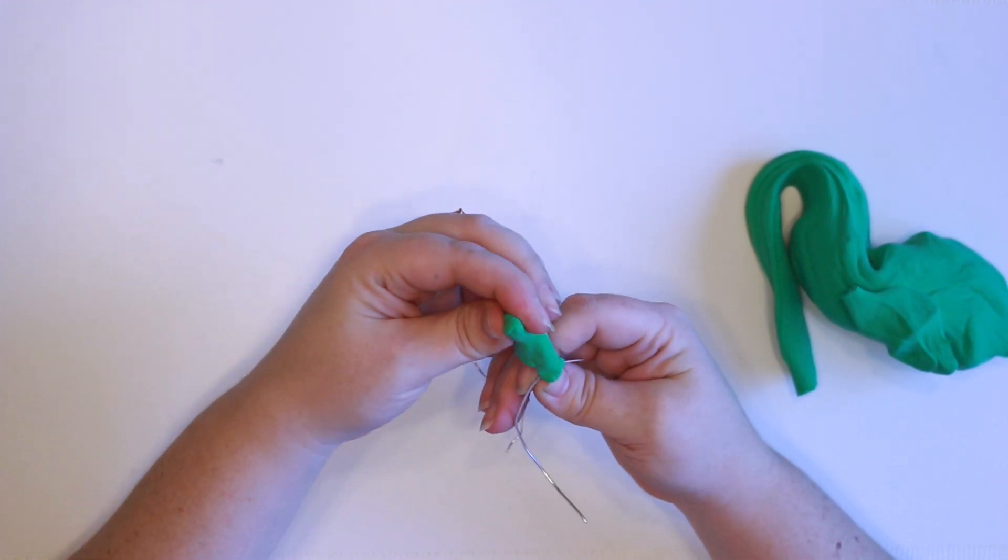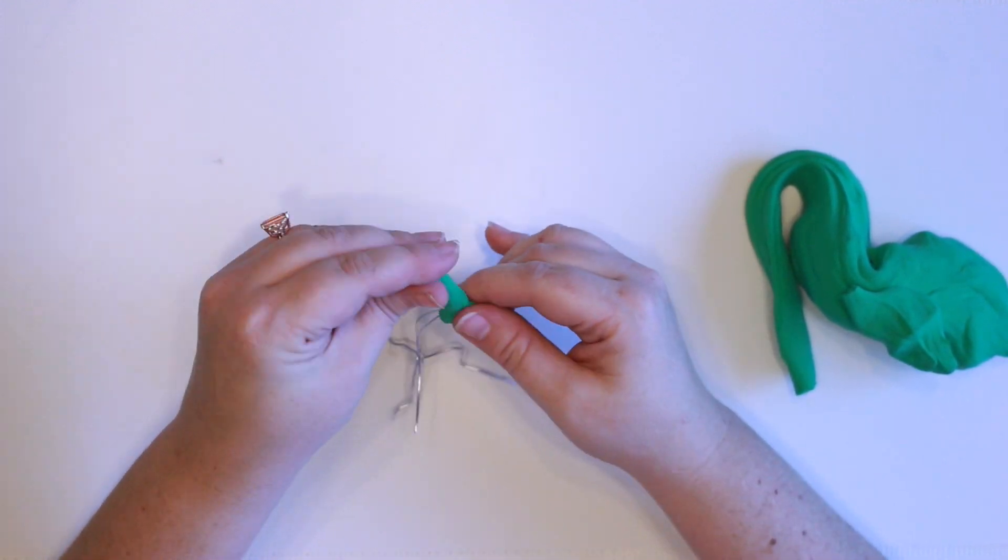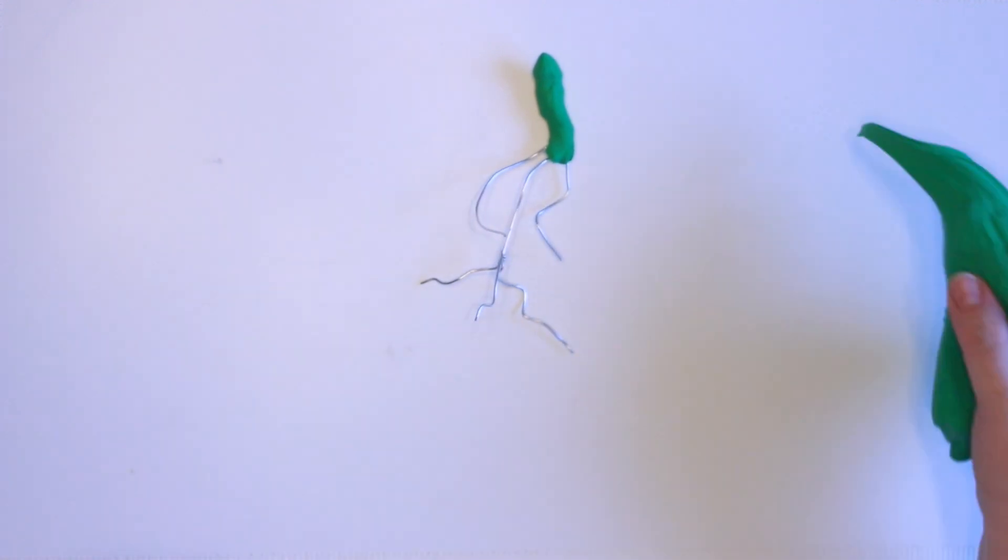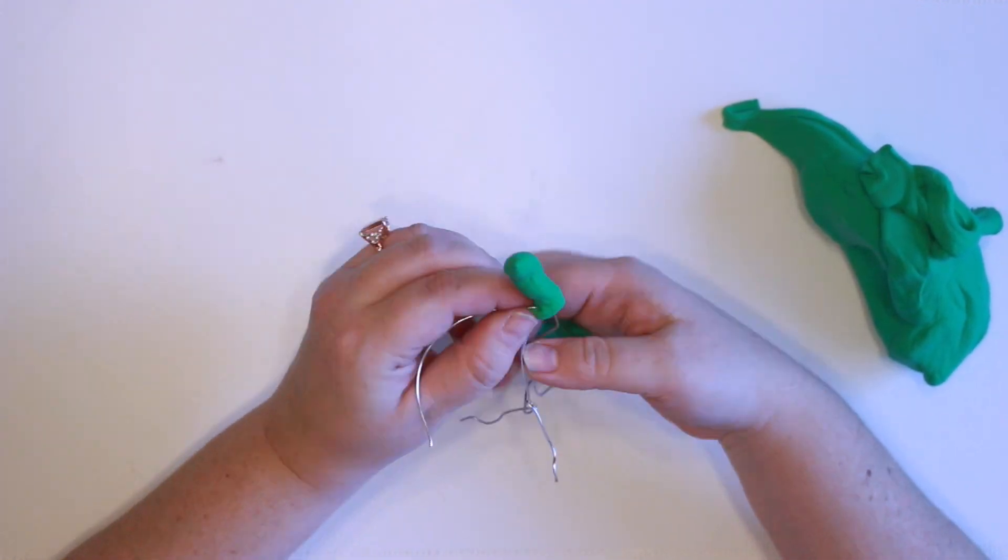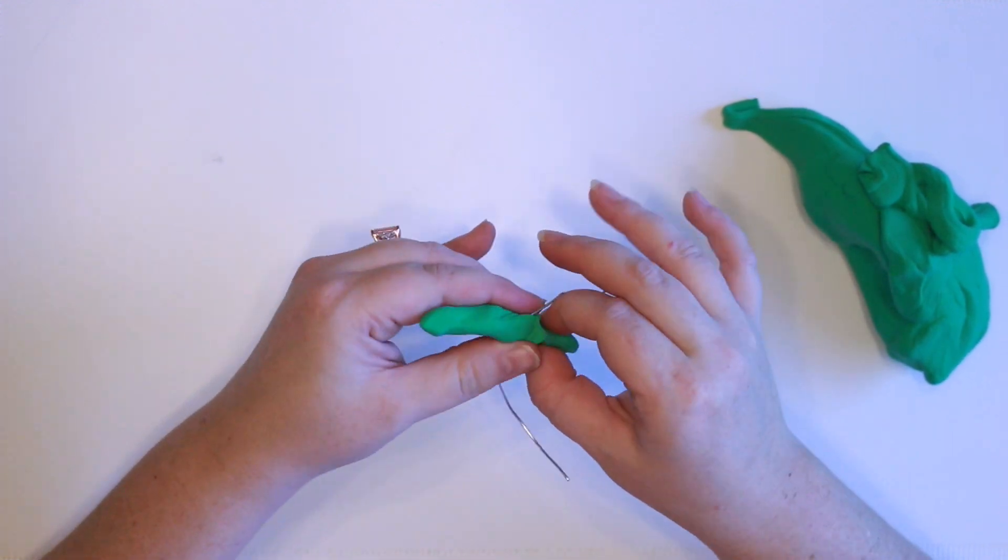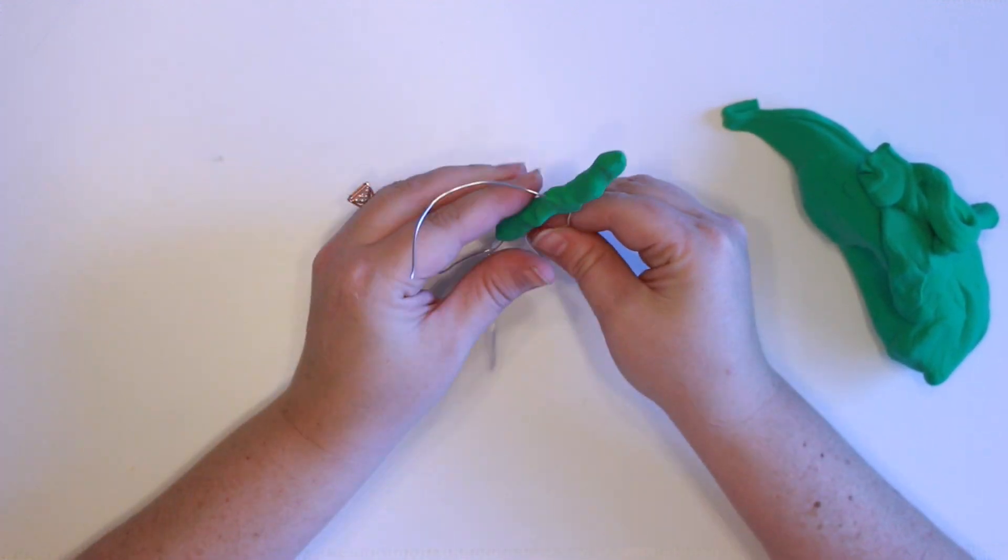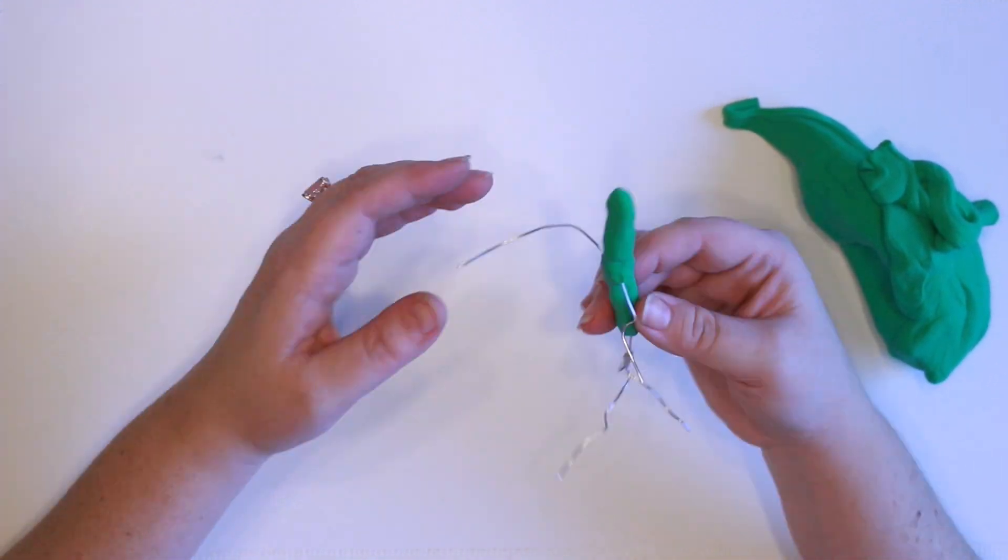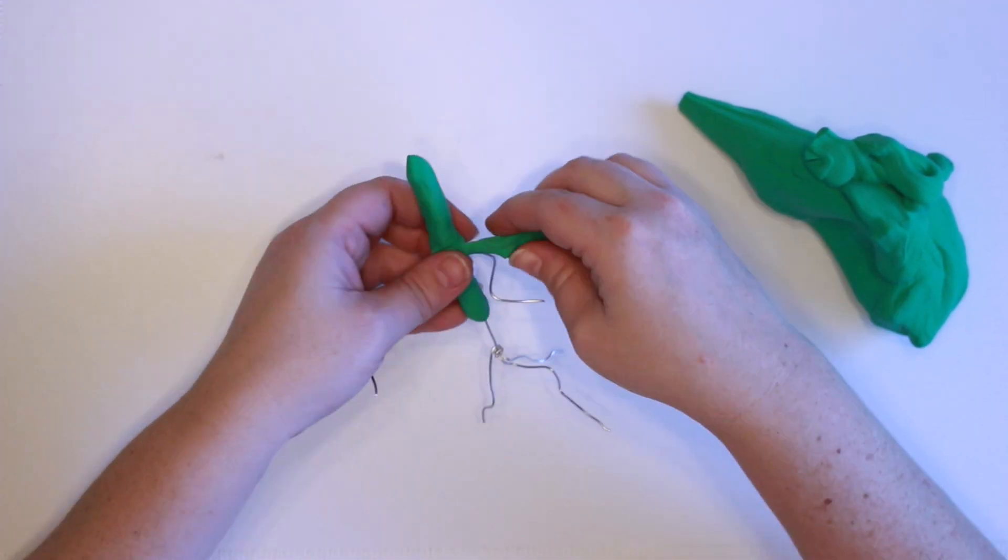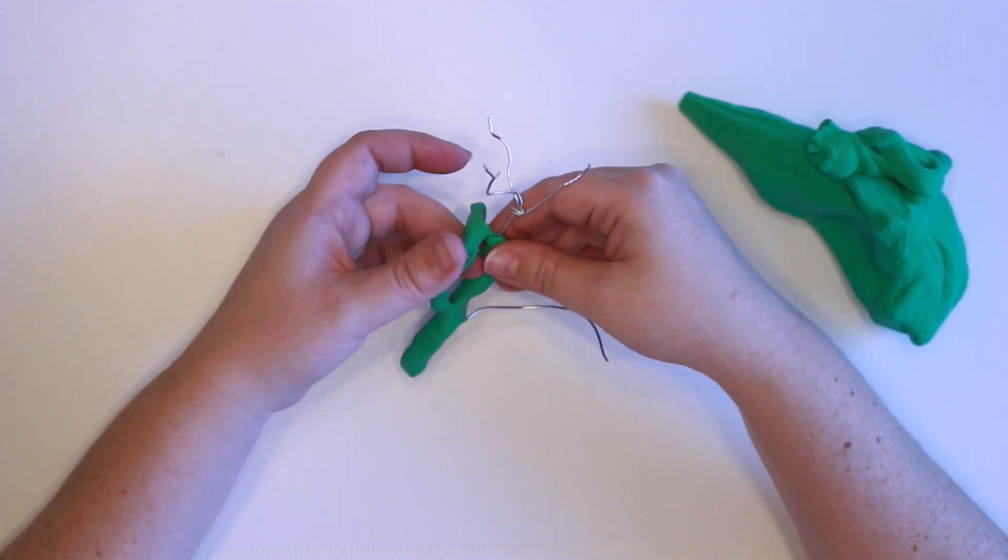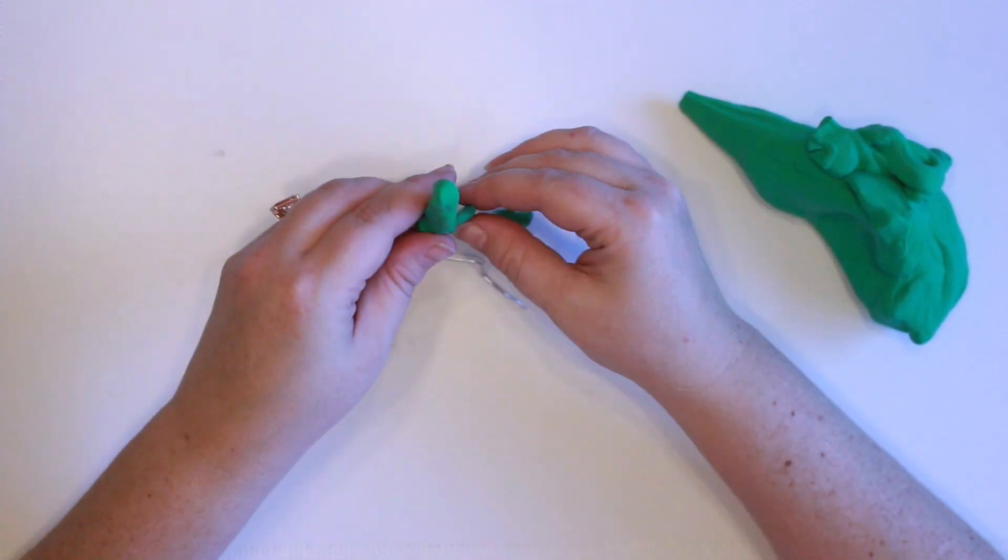Now I'm taking Model Magic, which if you've seen any of my other tutorials, you know this is one of my favorite craft supplies. It's a really great air drying clay. I'm basically just taking the Model Magic and dispersing it over all of the wire, working it to where the wire is in the middle of the Model Magic. This is just a very easy shaping clay. It feels like Play-Doh, so it's super easy to shape in your hands.